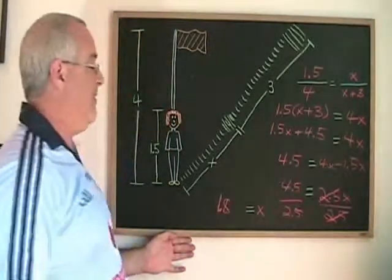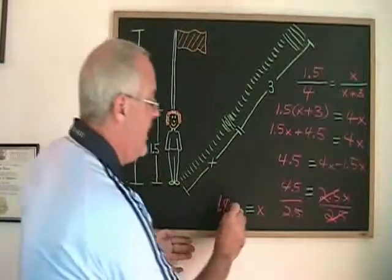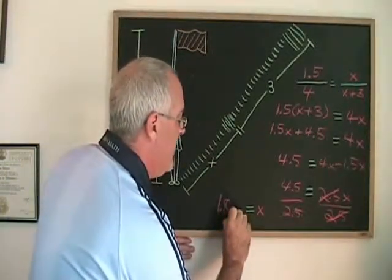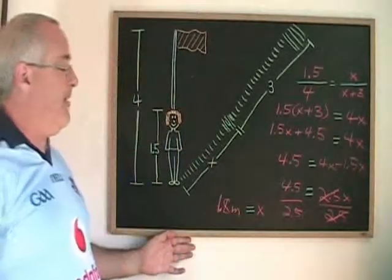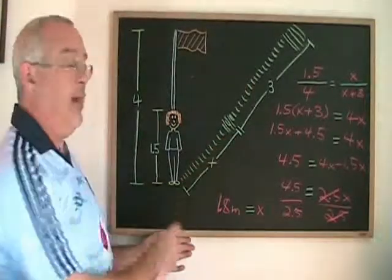Since the unit of measure I was using all along was meters, my final answer is 1.8 meters if I am asked to find the length of Julian's shadow.